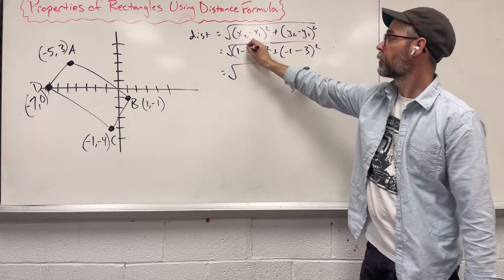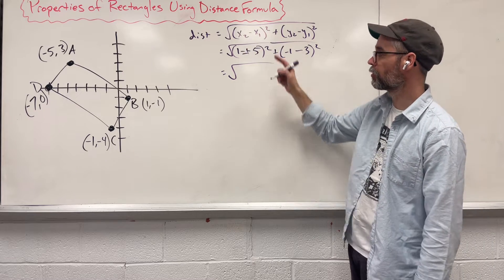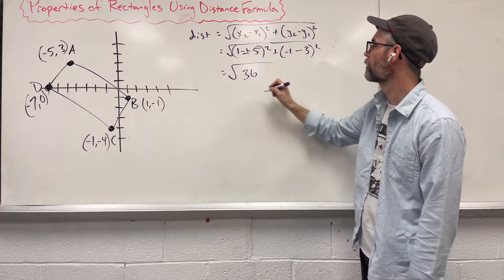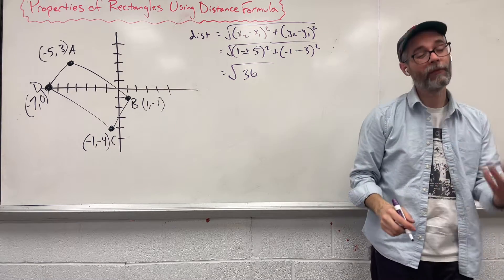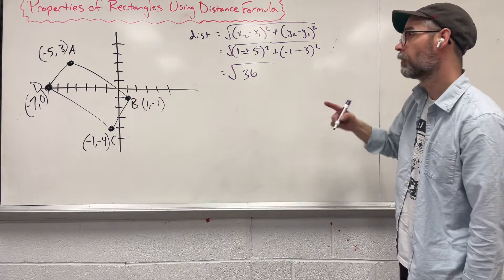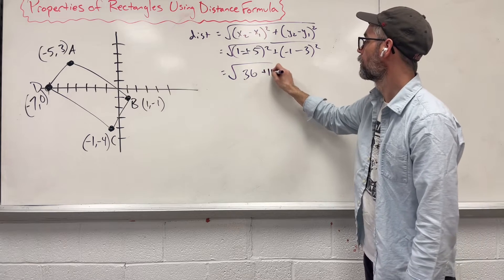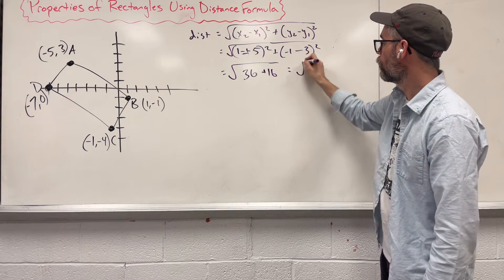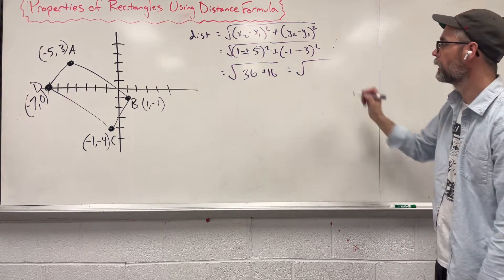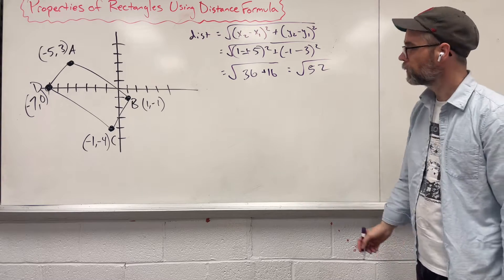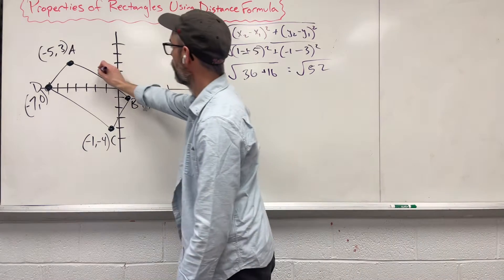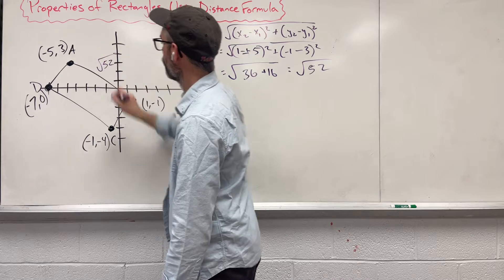1 plus 5 gives us 6, 6 squared ends up being 36. Over here we have negative 4, but negative 4 squared is going to give us 16. And then when we put those two things together we get 52. So we know that up here we get square root 52.